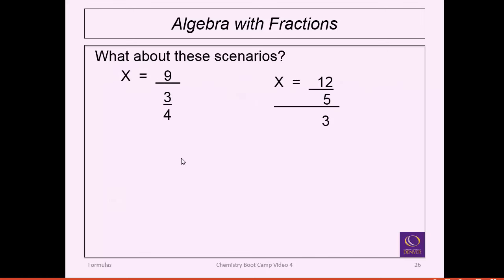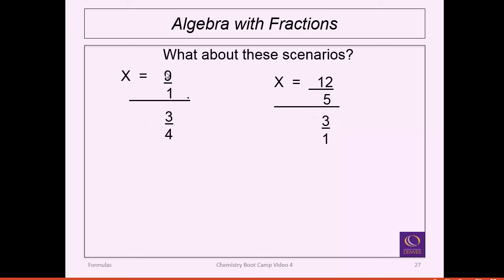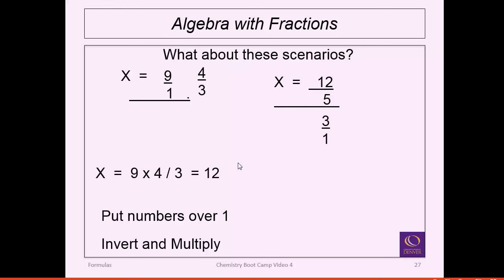Try to keep operations in two lines. If you have three lines of division, express whole numbers as fractions over 1, then apply invert and multiply. Anything in the numerator is multiplied; anything in the denominator is divided. So 12 divided by 3 divided by 5, or 12 divided by 5 divided by 3 — these are commutative, so order doesn't matter. The result is about 0.8.